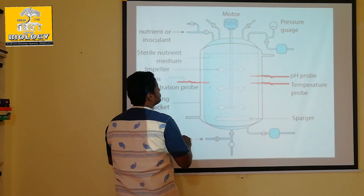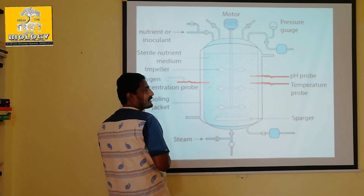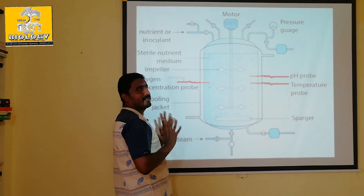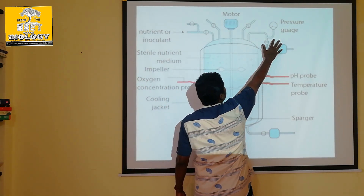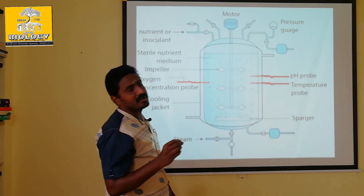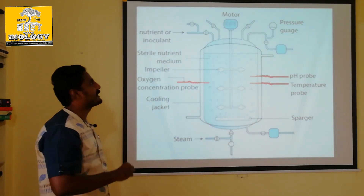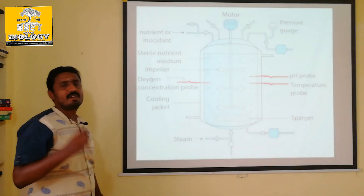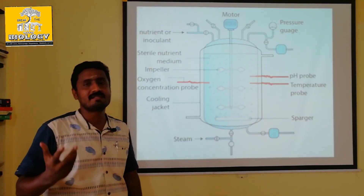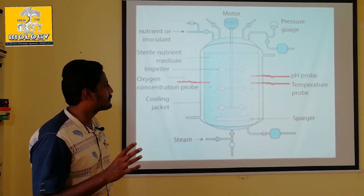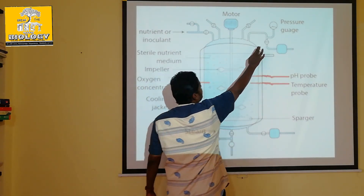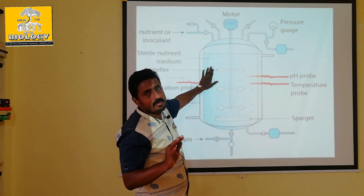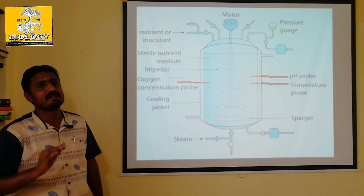Similarly, we are measuring temperature, oxygen, pH, and supplies in the bioreactor. This is the pressure gauge. In the case of a biogas plant, we need pressure — in this pressure gauge, we need pressure to maintain the bacteria.